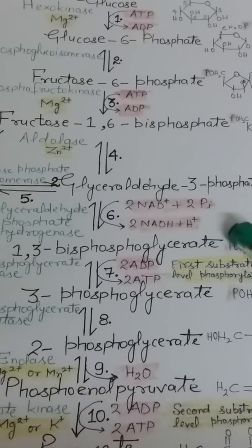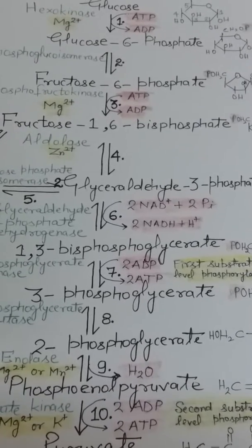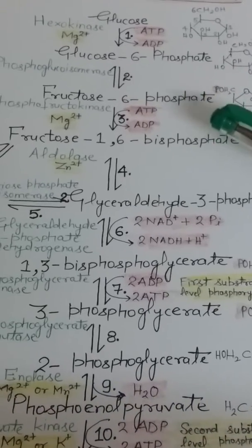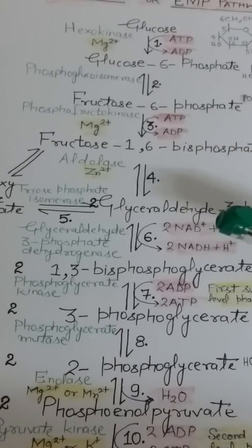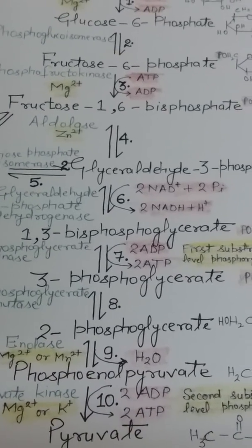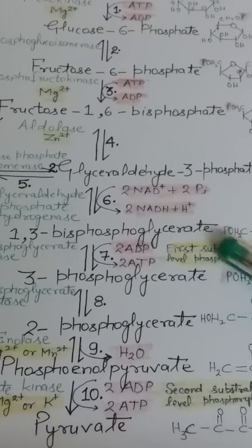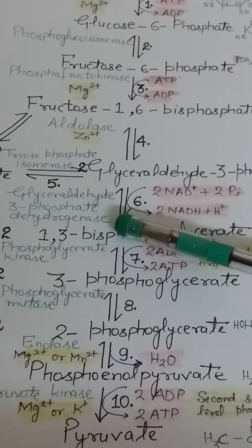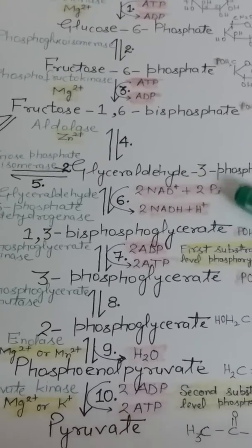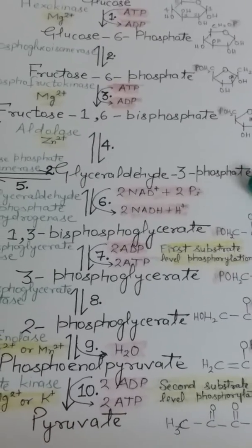Steps 6 through 10 constitute the payoff phase. Note that there are two glyceraldehyde-3-phosphate molecules — one obtained from fructose-1,6-bisphosphate and another from the isomerization of DHAP. In step 6, glyceraldehyde-3-phosphate is oxidized to produce 1,3-bisphosphoglycerate. The enzyme glyceraldehyde-3-phosphate dehydrogenase uses NAD⁺ and inorganic phosphate (Pᵢ). NAD⁺ is reduced and glyceraldehyde-3-phosphate is oxidized.